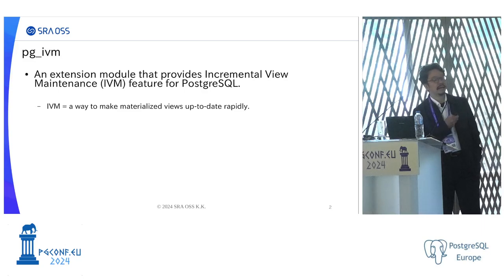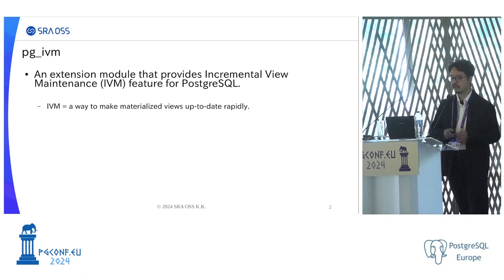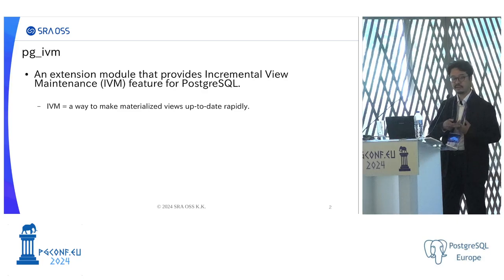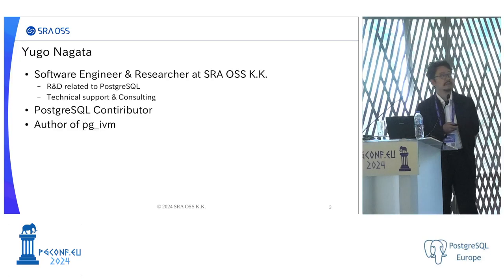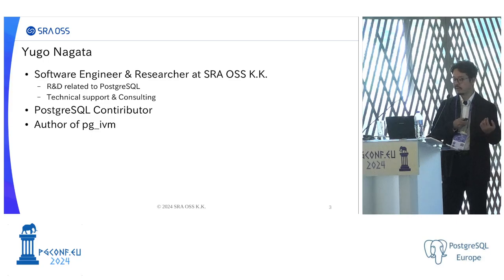PGIVM is an extension module that provides incremental view maintenance feature for PostgreSQL. Incremental view maintenance — we call it IVM — is in short a way to make materialized views up to date more rapidly than the refresh command. I'm Yugo Nagata, a software engineer and researcher at SRA OSS from Japan, and I'm in charge of R&D related to PostgreSQL, and sometimes I work for technical support and consulting services.